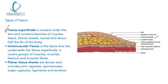Going to a slightly deeper layer, we have pre-muscular fascia, which you can see in this layer on screen. That brings us on to the layer we're going to focus on next — intramuscular fascia. This is a fascia we've talked about before; it lies underneath the fascia superficialis and covers groups of muscles, fasciculi, and muscle fibres.